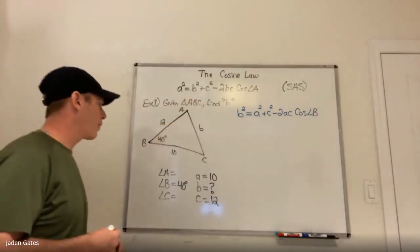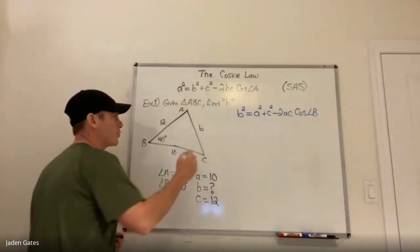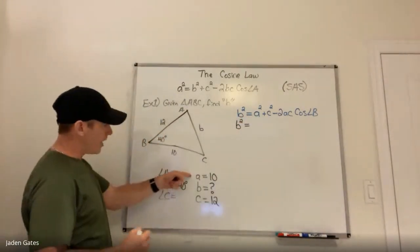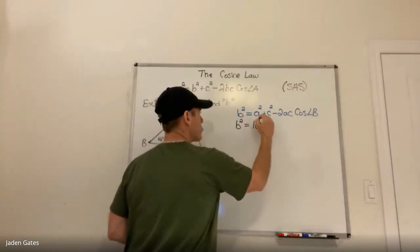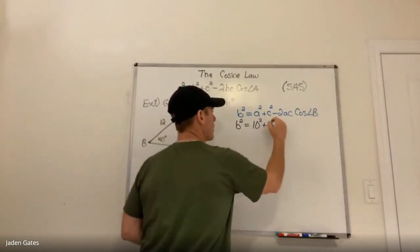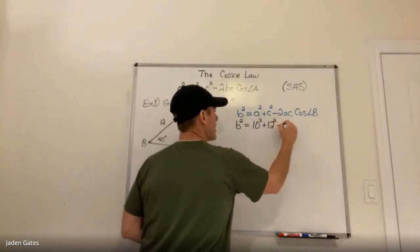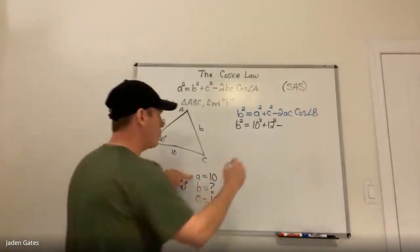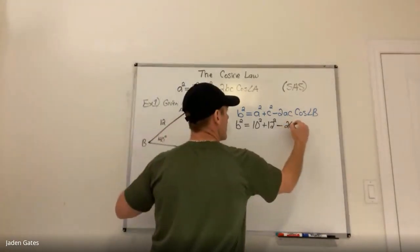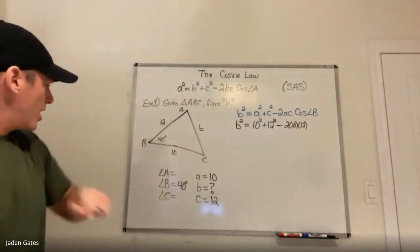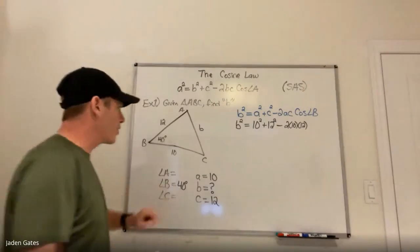Now I have my formula, so I can solve for side b. I'm going to substitute in my known information: b squared equals a squared, so a is 10 — I have 10 squared. C is 12, so I have 12 squared. Then minus 2ac, so minus 2 times a times c, times the cosine of angle B, which is 40 degrees.